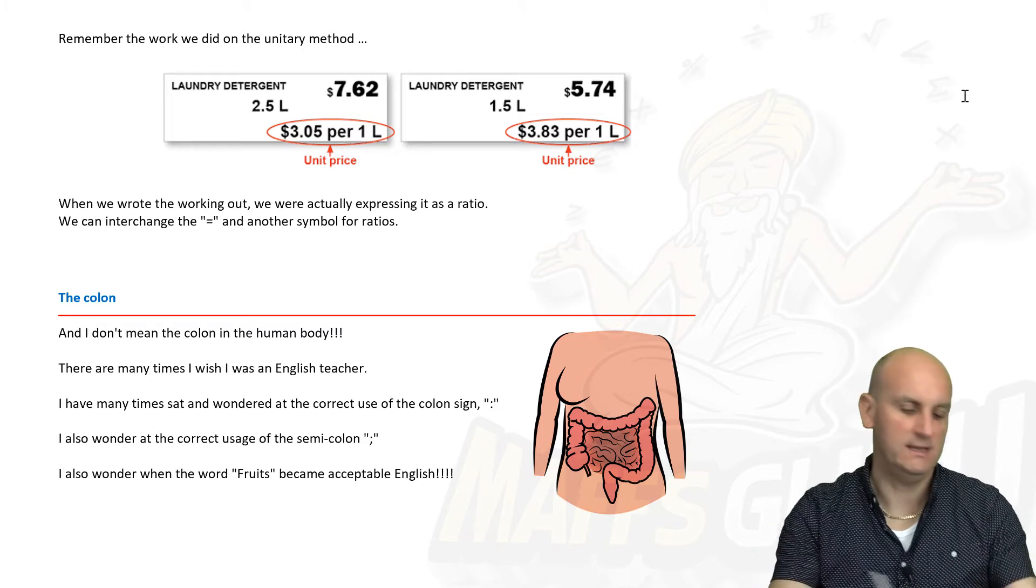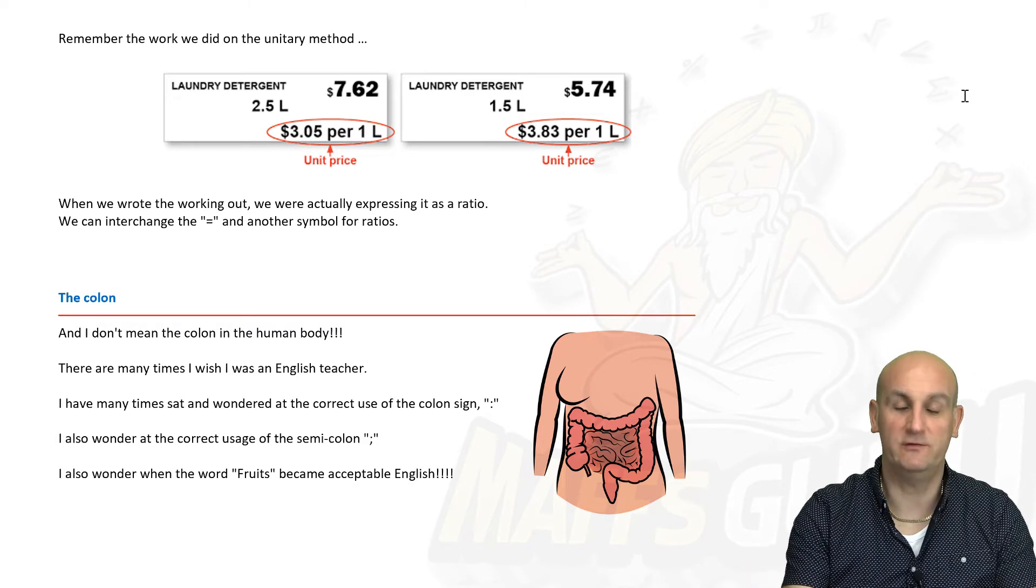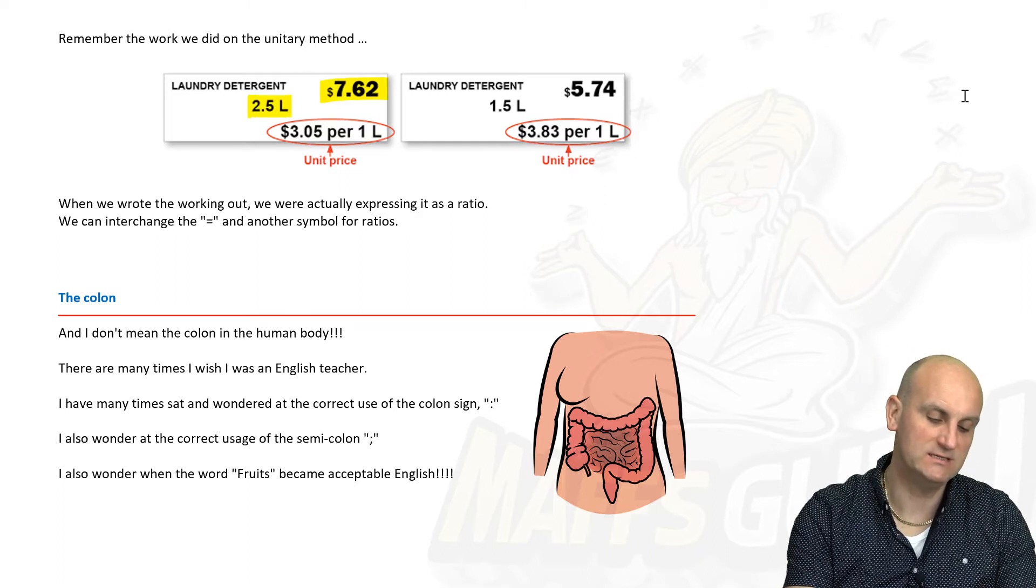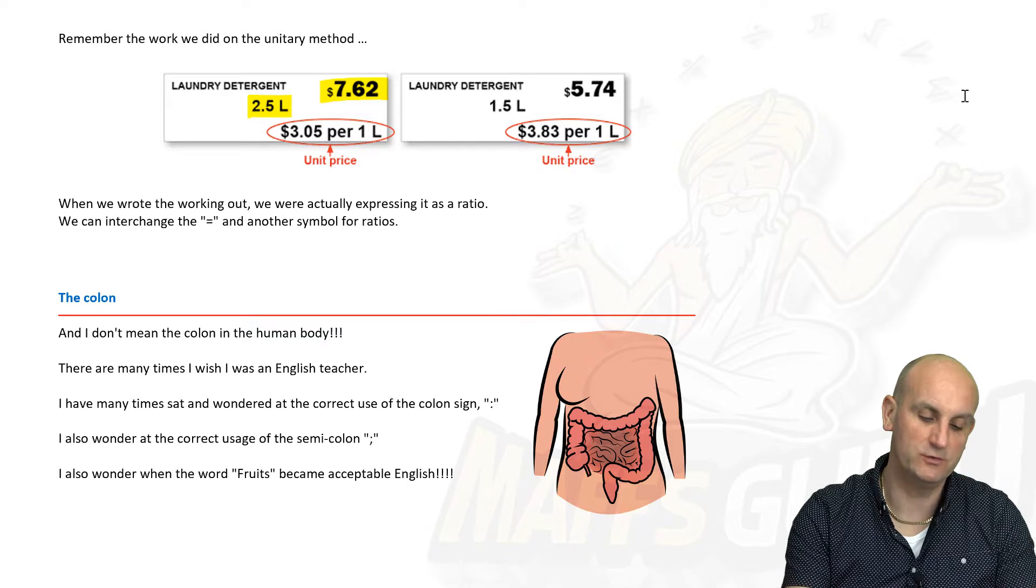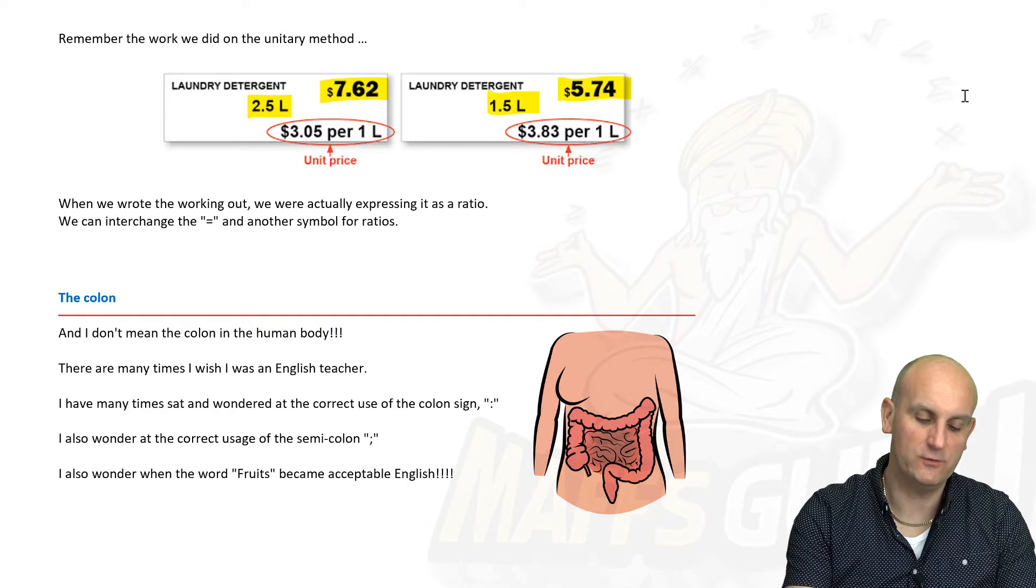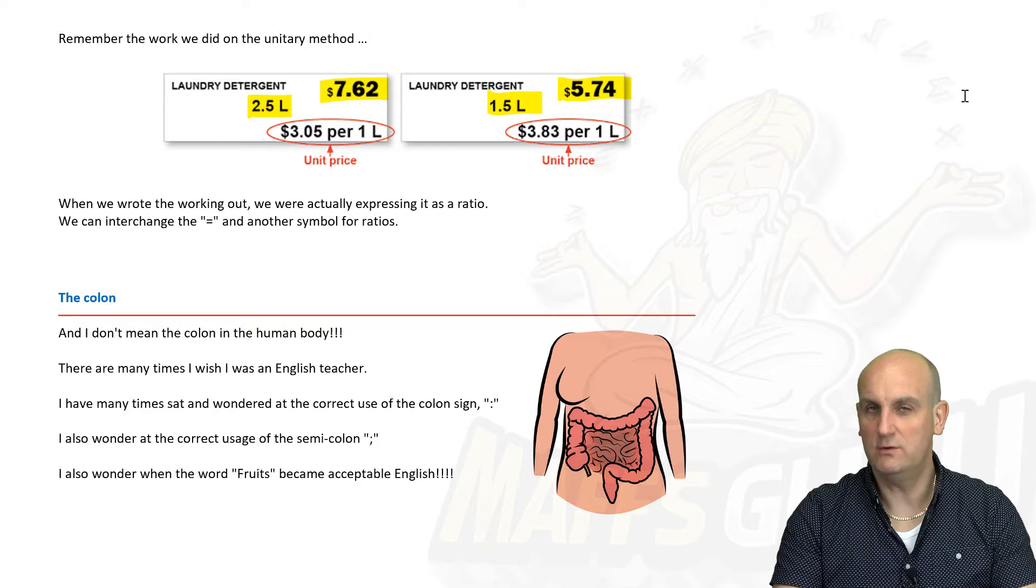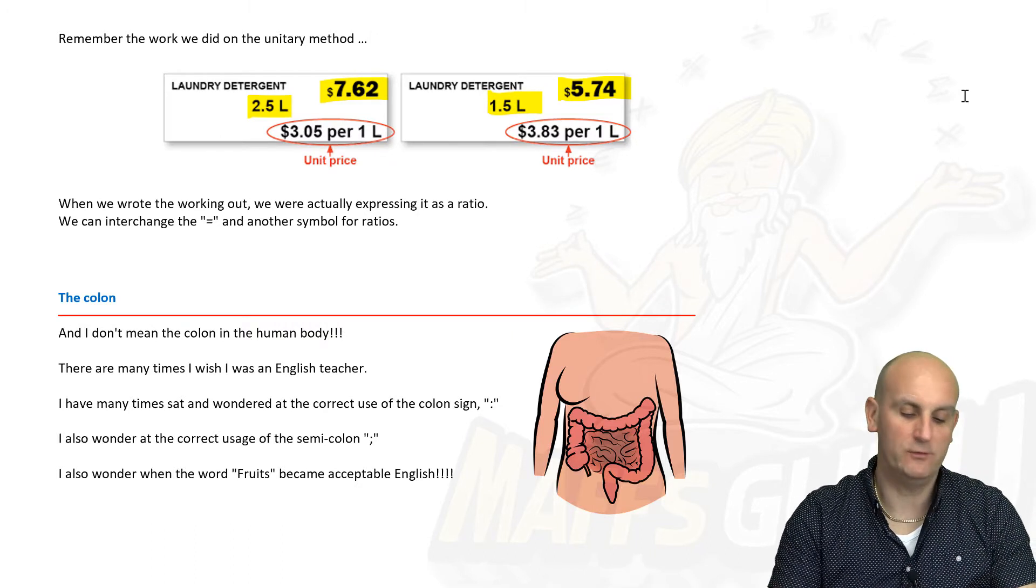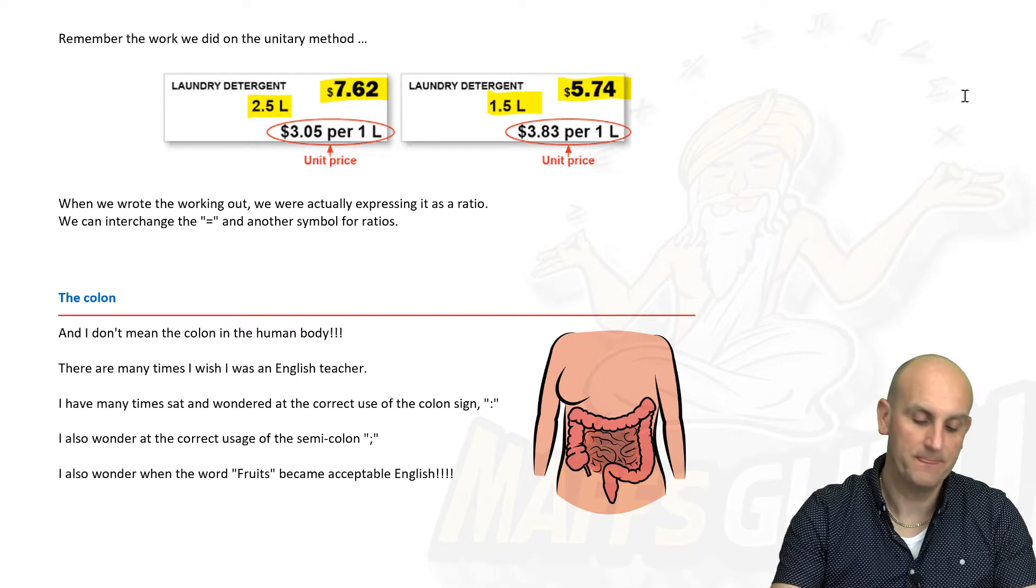We had this idea that when you go to the supermarket, we very much want to know whether we've got a best buy. I know in the UK when I taught this, this was called best buys. If you've paid seven dollars sixty-two cents and you're getting two and a half liters of laundry detergent, is that better value than five dollars seventy-four when I get a liter and a half? Well it seems cheaper, but what we do is really relate this back to the cost per liter.